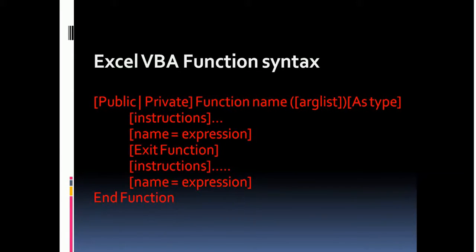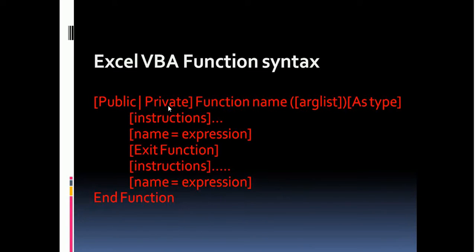The function should begin with an access specifier, either public or private. If you make the function public then it can be accessed by any other modules — that means subroutines and functions present in any other modules can access it, and you can also use this function as a formula in that workbook. If you declare the function as private, it can only be accessed within the module and you cannot use it as a formula.